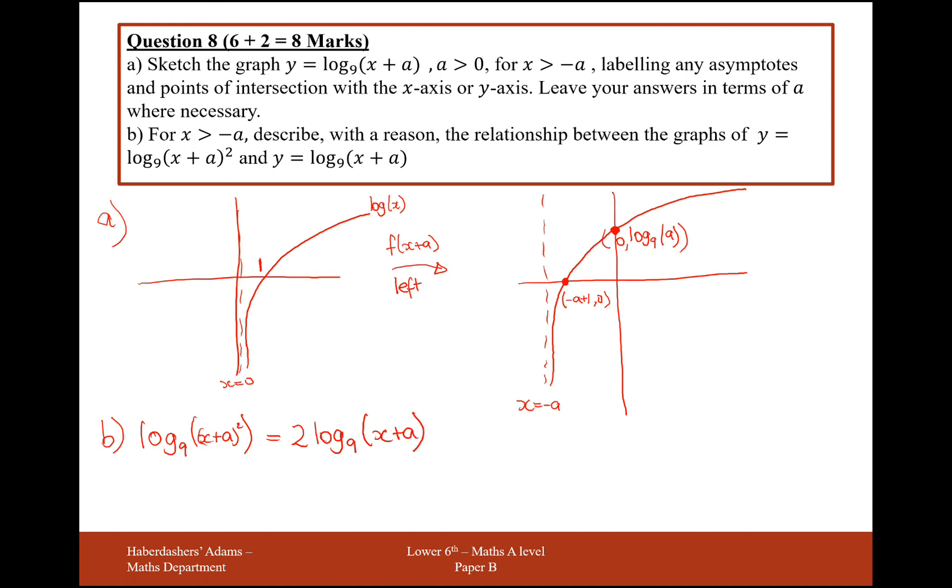So what this is going to do as a relationship between these two graphs is this is going to be a scale factor 2 enlargement from the x-axis. Effectively the same as the transformation 2f of x. So it's going to double the height of the graph on the top and double the depth of the graph on the bottom there.